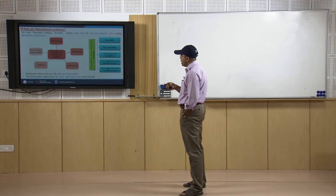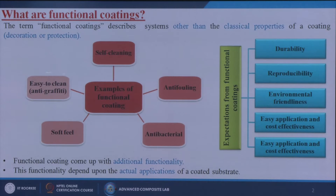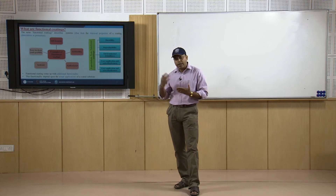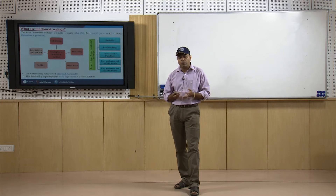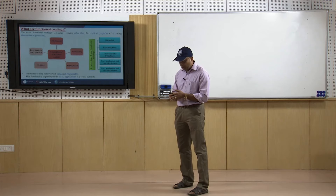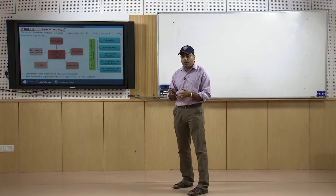The term 'functional coatings' describes systems other than the classical properties of a coating such as decoration or protection. Sometimes we do coatings for ornamental purposes, changing the aesthetic properties so the material looks good or glitters. Sometimes coatings are applied for safety purposes, so the material does not directly interact with the environment — water molecules, moisture, acidic or basic conditions. But here we are going beyond these conventional coatings and techniques.